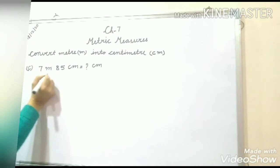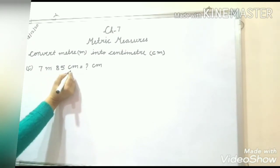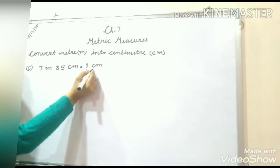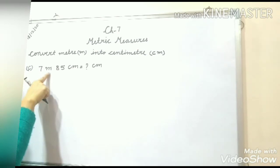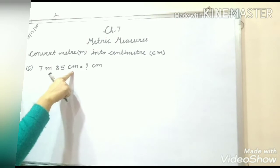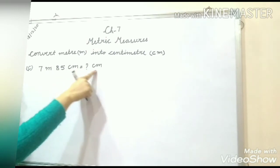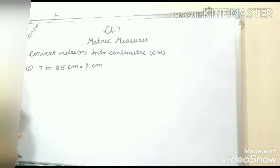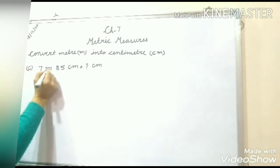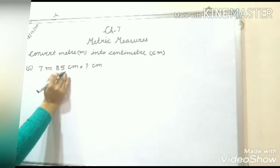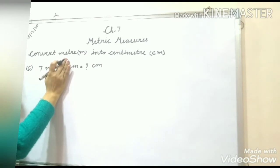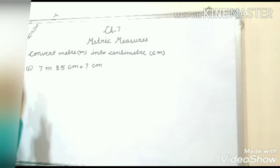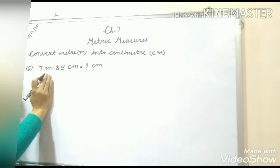Now let's look at another example. The question is 7 meter 85 centimeter, and we have to convert it into centimeter. In this question you can see both units are given — meter and centimeter — and we have to convert everything into centimeter. For this type of question, we first convert the meter unit into centimeter, and the second part is already in centimeter form so we will use it later.